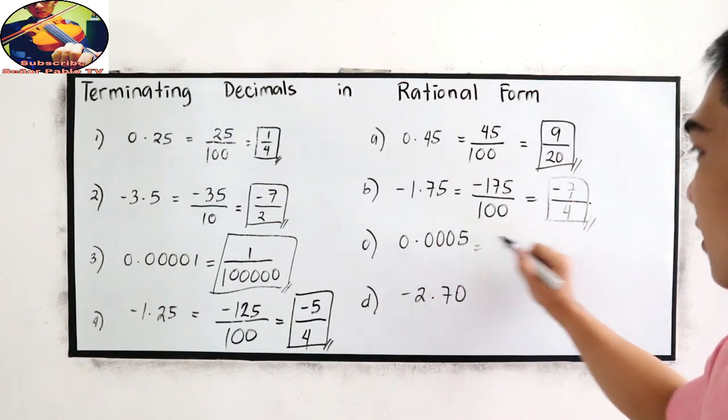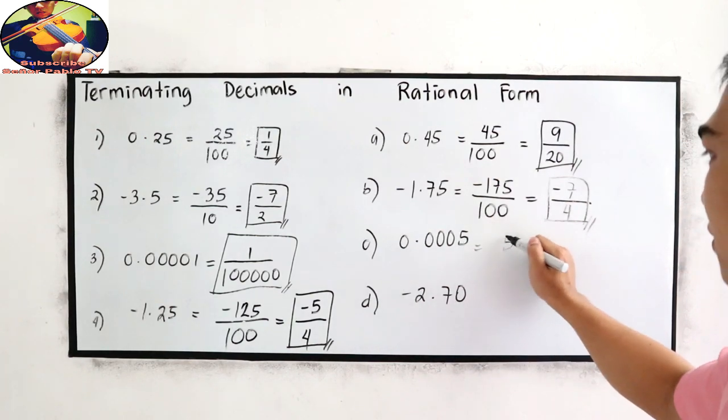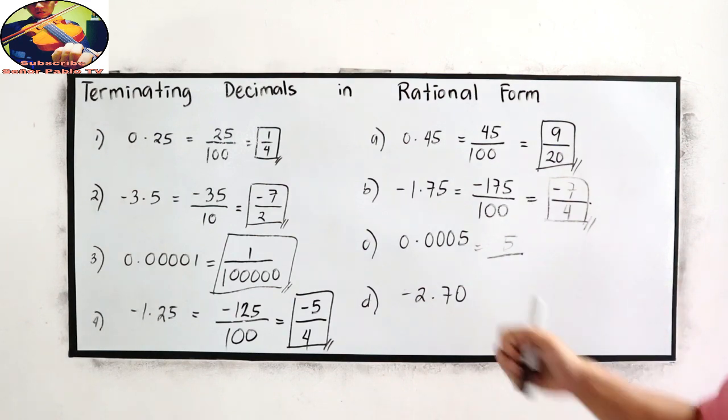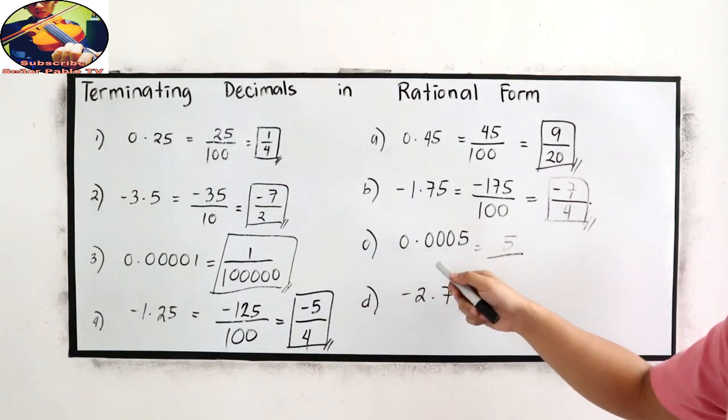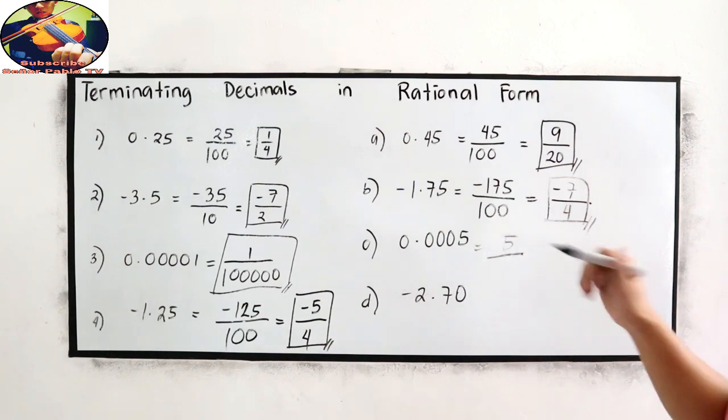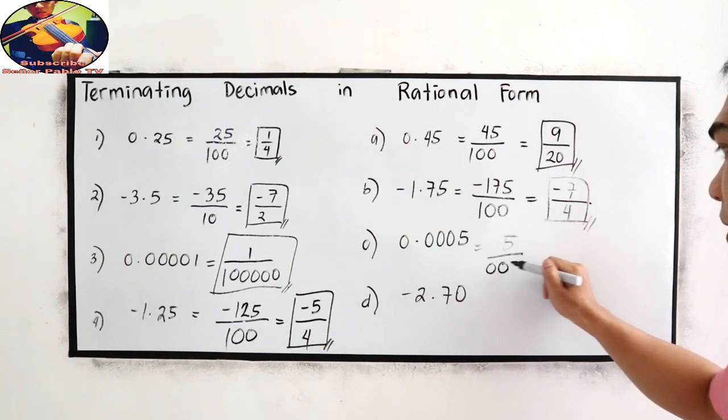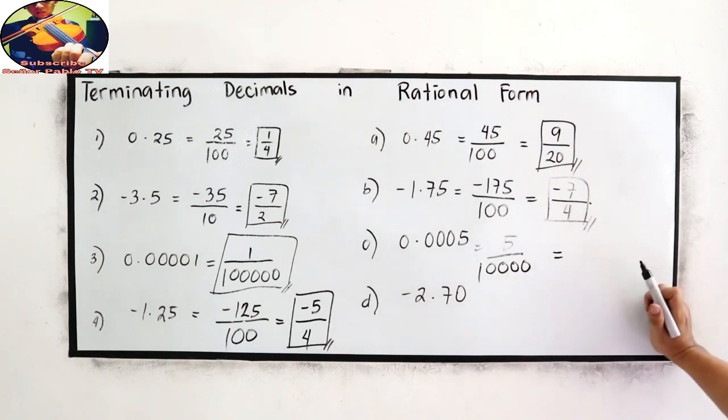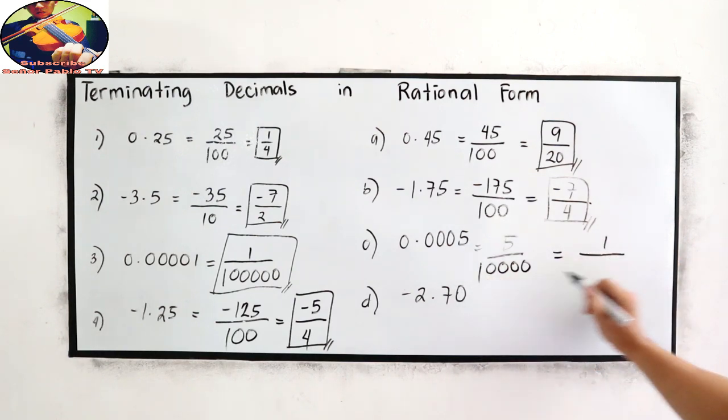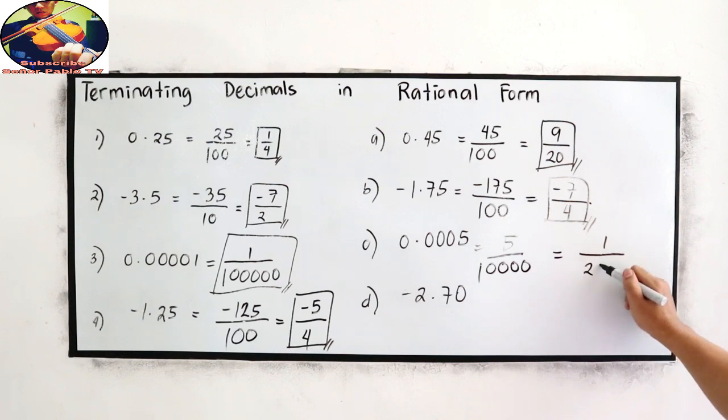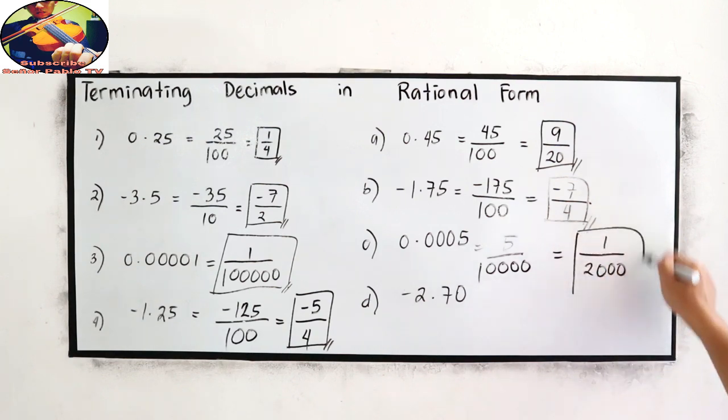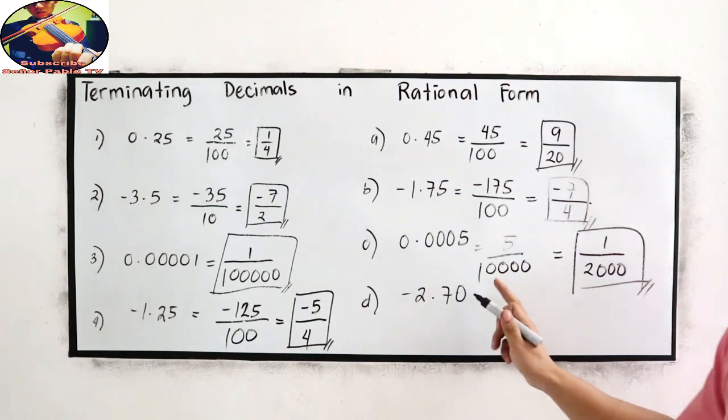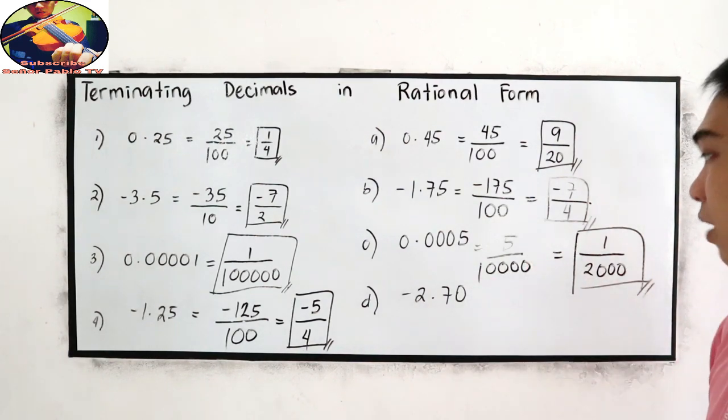Next. So 5 over how many zeros? Or how many decimal places? 1, 2, 3, 4. So we have 4 zeros in our denominator. 5 over 10,000. Divisible by 5. So 1 over 2, 1, 2, 3. 1 over 2,000. So that is 10,000 divided by 5, which is 2,000.